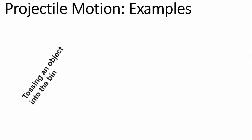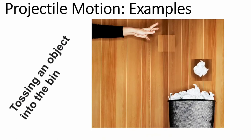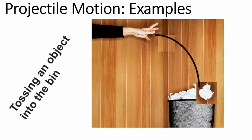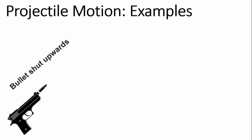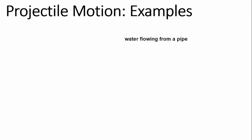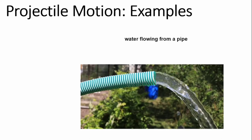There are several other examples. If you toss an object into a waste bin such that its path is parabolic, it's projectile motion. If you have a bullet shot from a gun such that it moves through a parabolic path, it's undergoing projectile motion. Water flowing from a pipe such that its path is parabolic is also projectile motion, and so on.